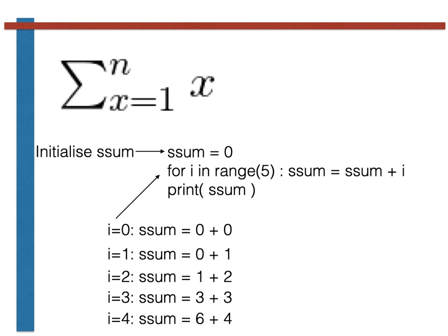In the final pass through the loop, we have i equals 4. We thus set ssum equal to its current value of 6. We add to that i, which is 4. So at the very end of the code, when we print the final value of ssum, we find that it is equal to 10.